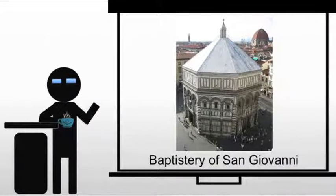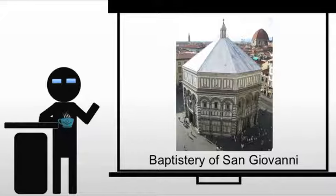Now we move to Florence, and we're looking at the baptistry — specifically the Baptistry of San Giovanni. This is outside the cathedral in Florence, though the cathedral itself is a Renaissance structure. Florence at this time is an independent city-state. What we see is a central-planned building influenced by the Pantheon. It should remind you of a lot of Byzantine structures, as well as many of the structures we saw in Ravenna in late antiquity and during the Byzantine period.